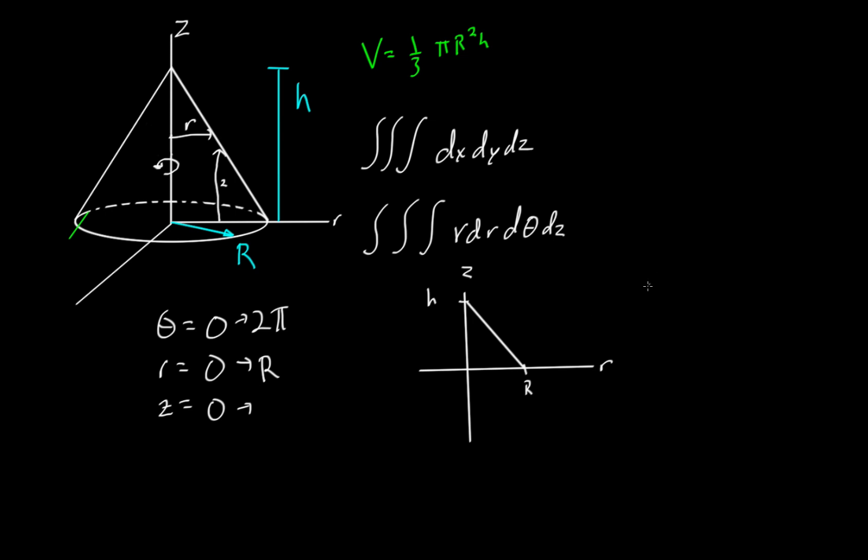If you remember from Cartesian coordinates, the base equation for a line is y equals mx plus b, where m is the slope and b is the y intercept. Well, we can simply translate that directly into cylindrical coordinates. So we can equal z equals mr plus b, where m is our slope and b is our z intercept. So in this case, z, our surface that we're going to, that the cone is bounded by, is equal to z equals...